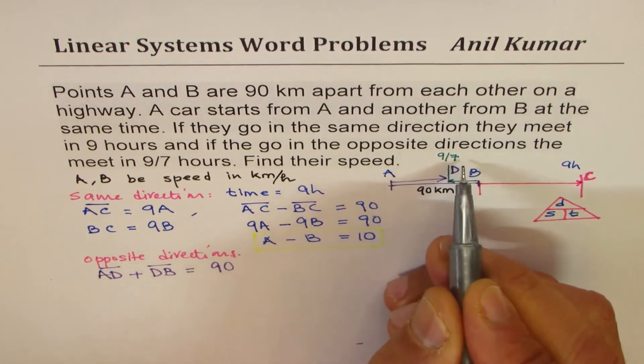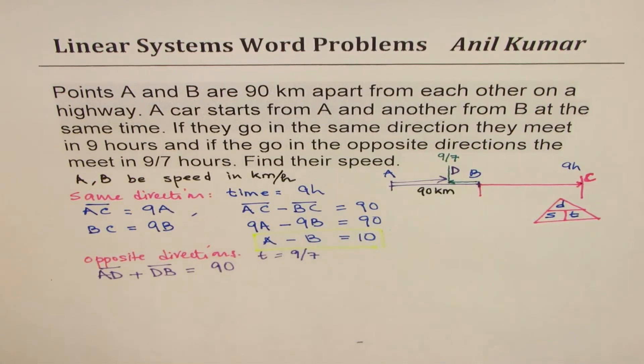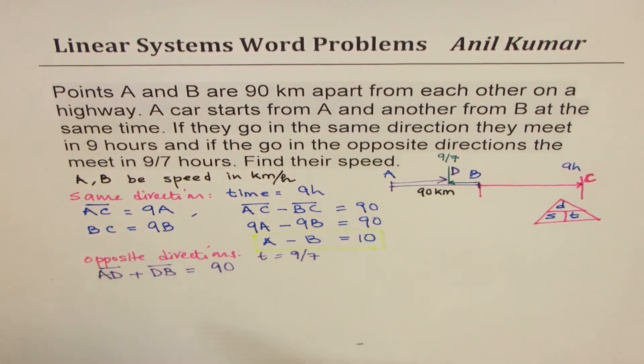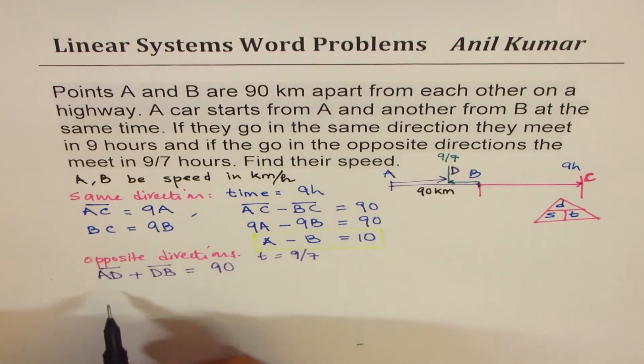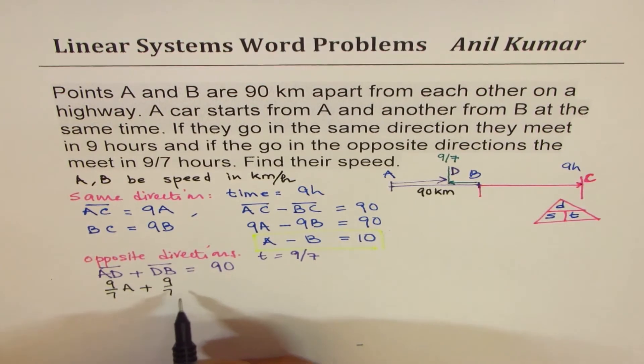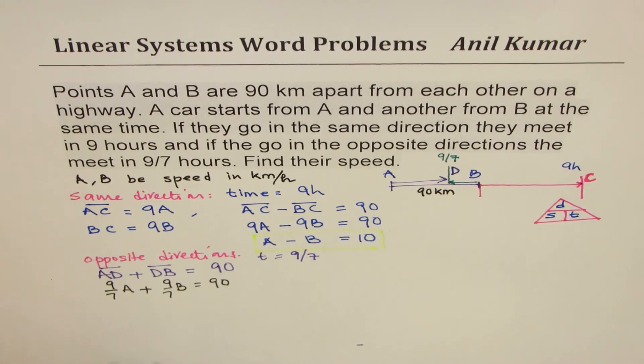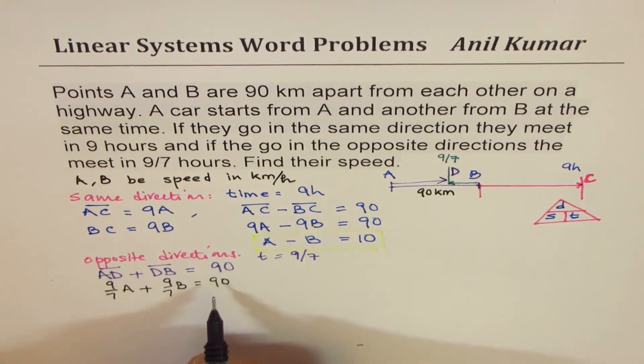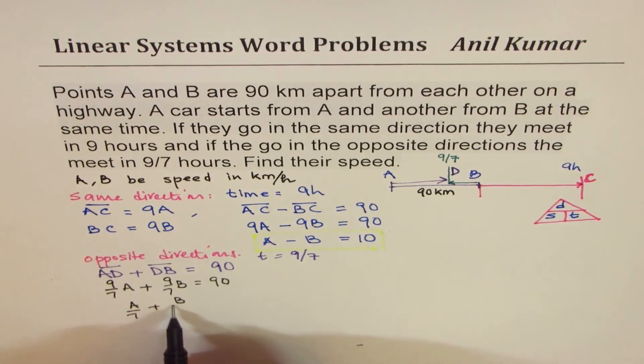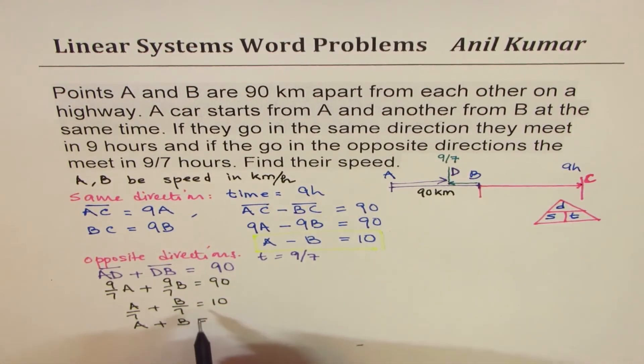A is traveling with speed of A, time is 9 over 7. So time in this case is 9 over 7. So therefore, now I can write down my equation as A times 9 over 7, or 9 over 7A plus the same time 9 over 7B is this time equals to 90. Dividing by 9, multiplying by 7. Let's first divide by 9. So we get A over 7 plus B over 7 is 10. Or we can say A plus B is equal to 70.